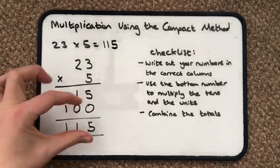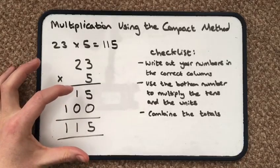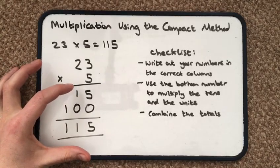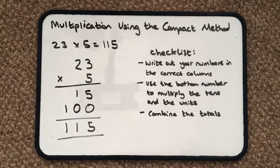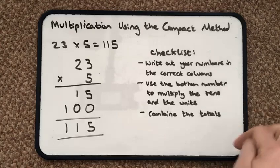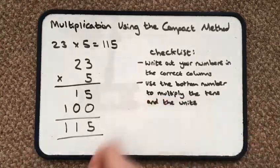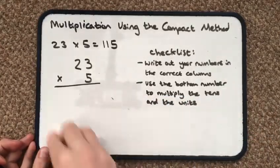That is called the expanded written method because I have had to expand out my answers. I'm going to now show you the compact method. And you're not actually going to need to combine the totals. And you're going to get the same answer.